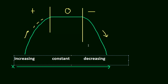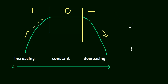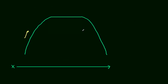We can use this to figure out when a function is increasing and decreasing, and we can use it to find maximum and minimum points too. If we have a critical number C, and to the left of it the function is increasing and to the right it's decreasing, then we know it's a maximum. If to the left it's decreasing and to the right it's increasing, then it's a minimum.